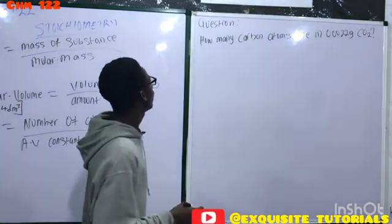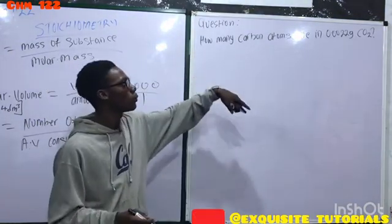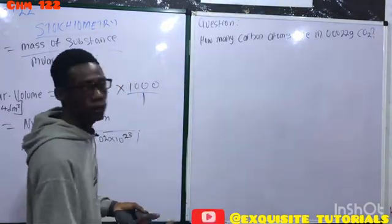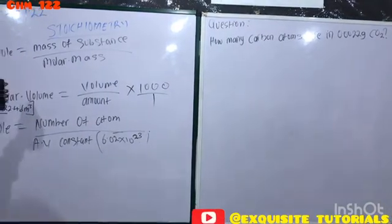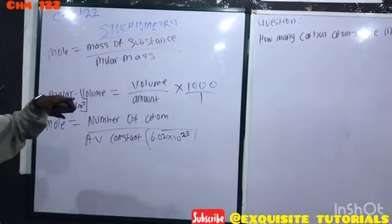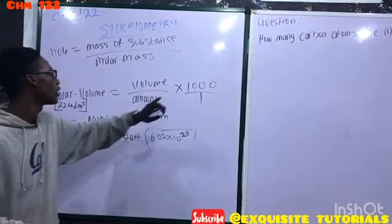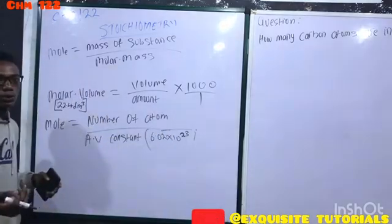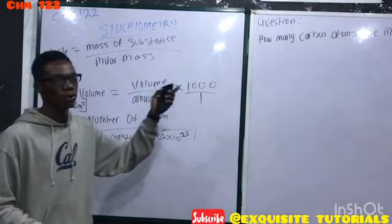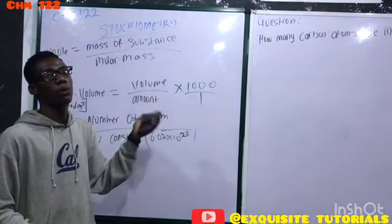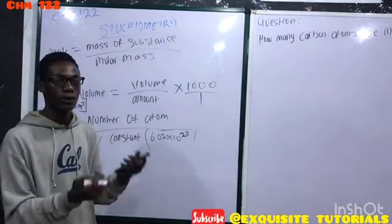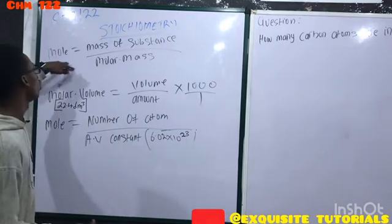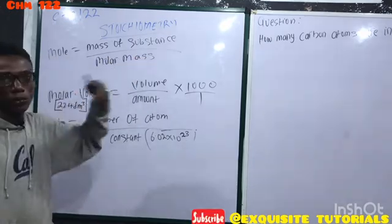Next problem: how many carbon atoms are in 0.0022 grams of CO₂? They said how many carbon atoms, so you should know this is what they're looking for—the number of atoms. You can't find the number of atoms when you don't have the number of moles, so we use mole equals mass over molar mass first.